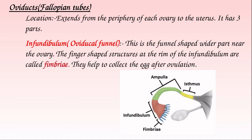The oviduct has three parts. The first is the infundibulum, or oviductal funnel — the funnel-shaped, wider portion near the ovary. The rim of the infundibulum has finger-like projections called fimbriae. After ovulation, the fimbriae collect the released ovum and direct it towards the inside of the oviduct.